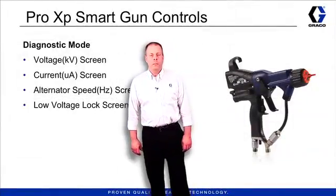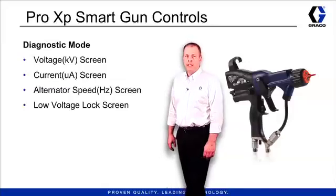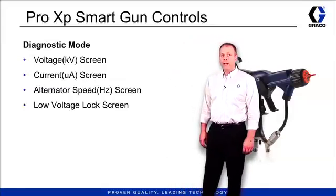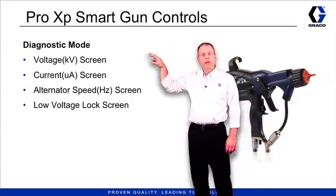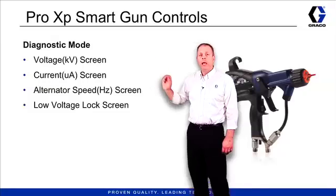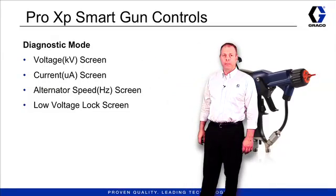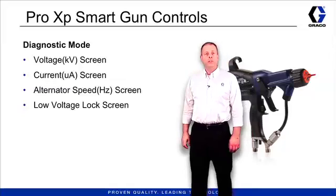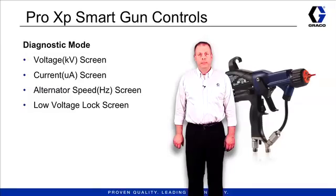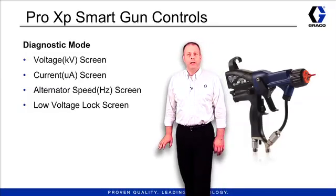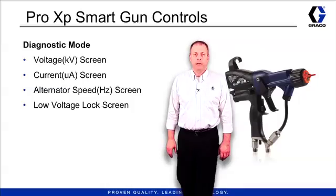The Pro XP smart gun control also has diagnostic mode. In the diagnostic mode, you can go out and you can look at the voltage and the current actual output numbers as well as the alternator speed. In addition, once you have your low voltage setting, you can lock it into position. With that, let's take a closer look at the smart gun screens.